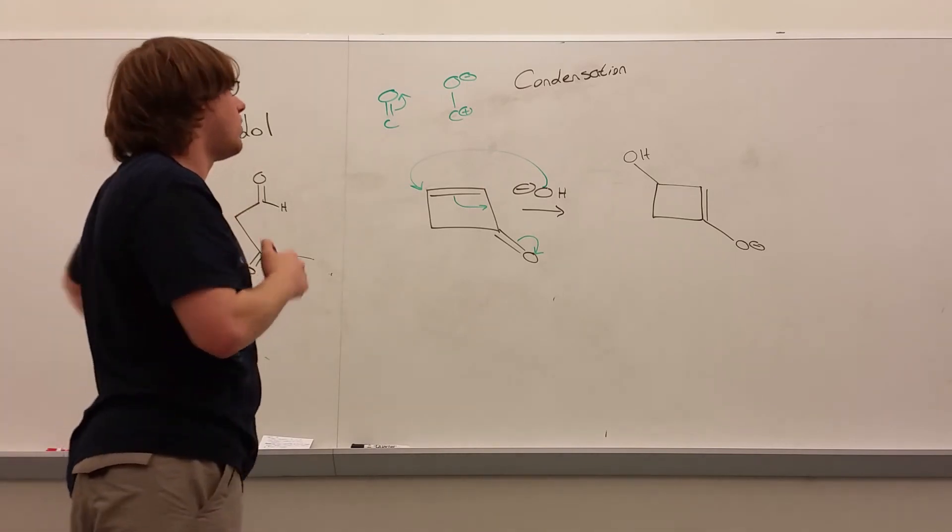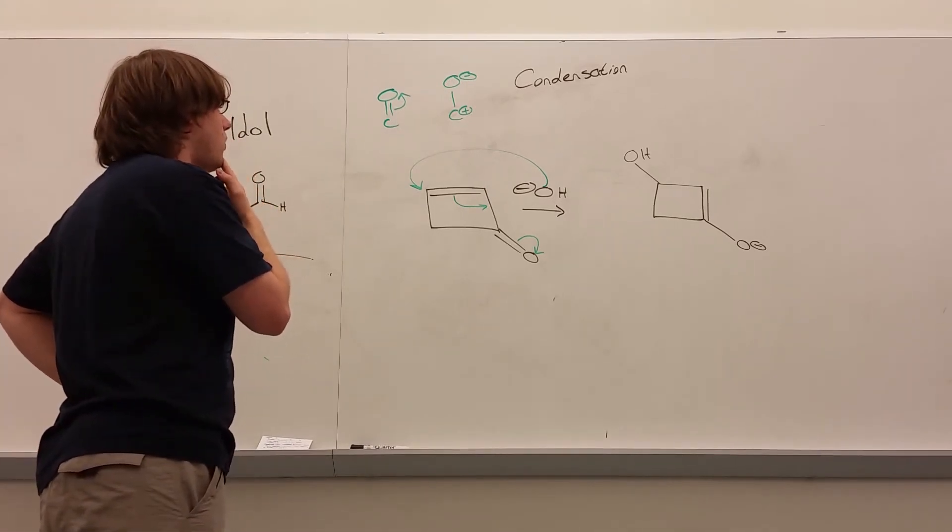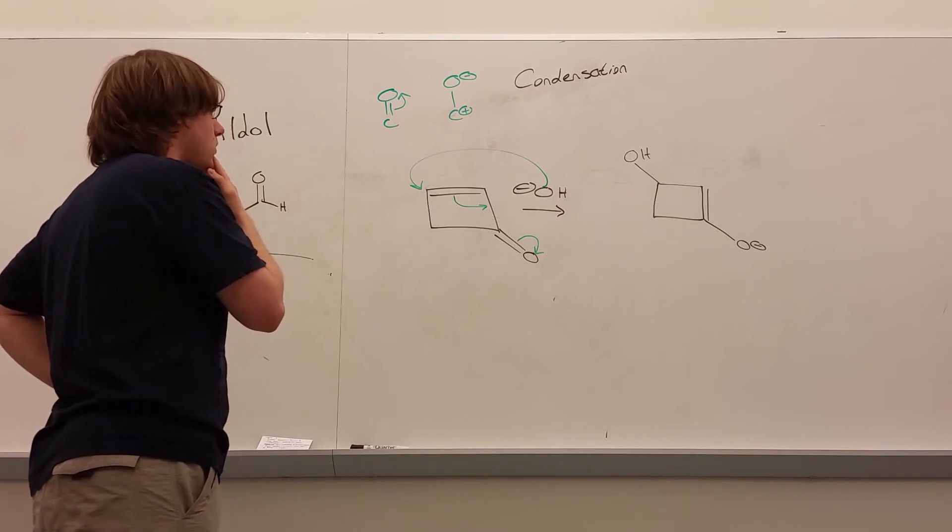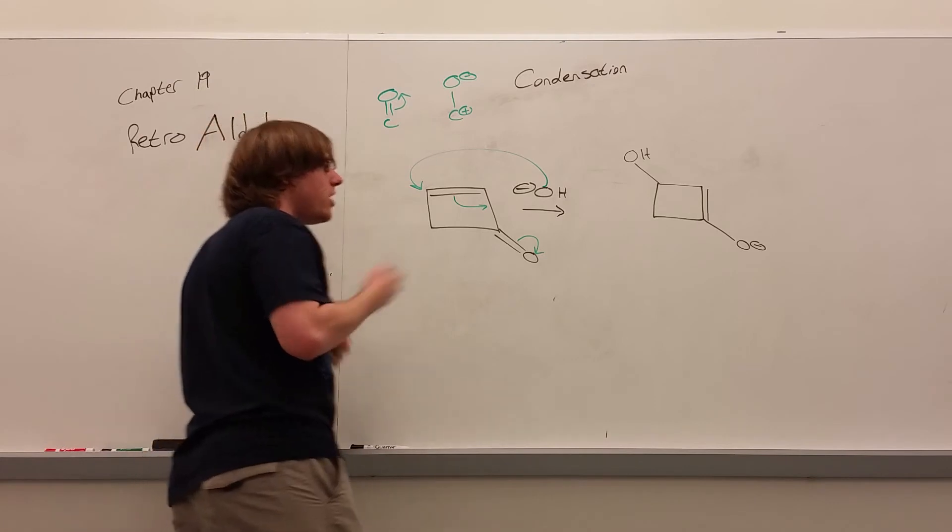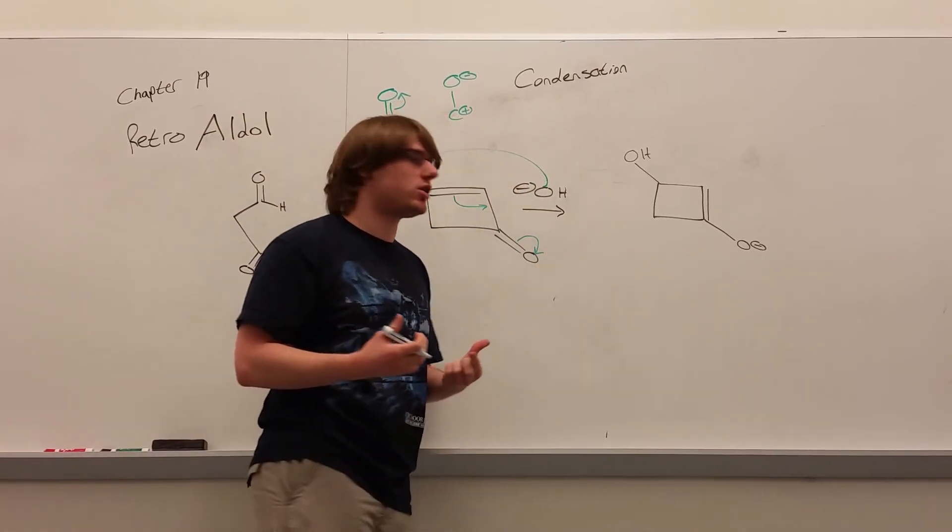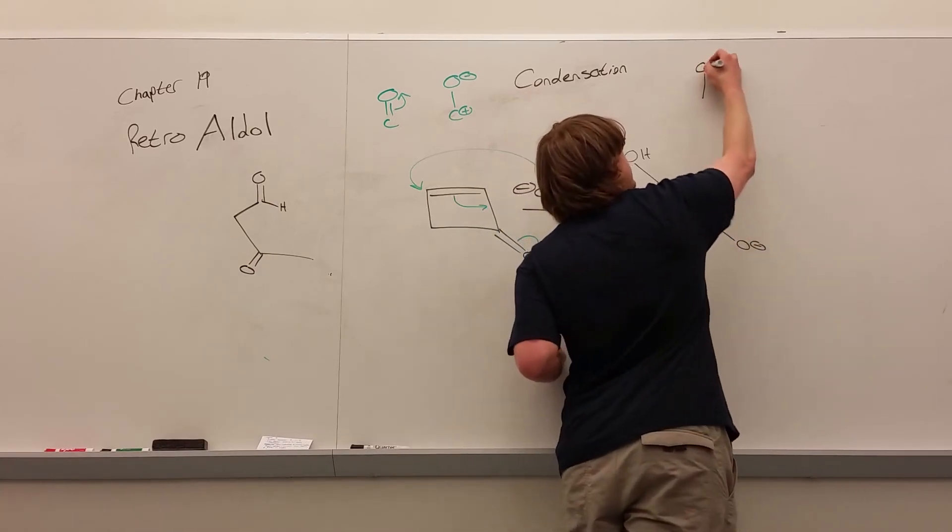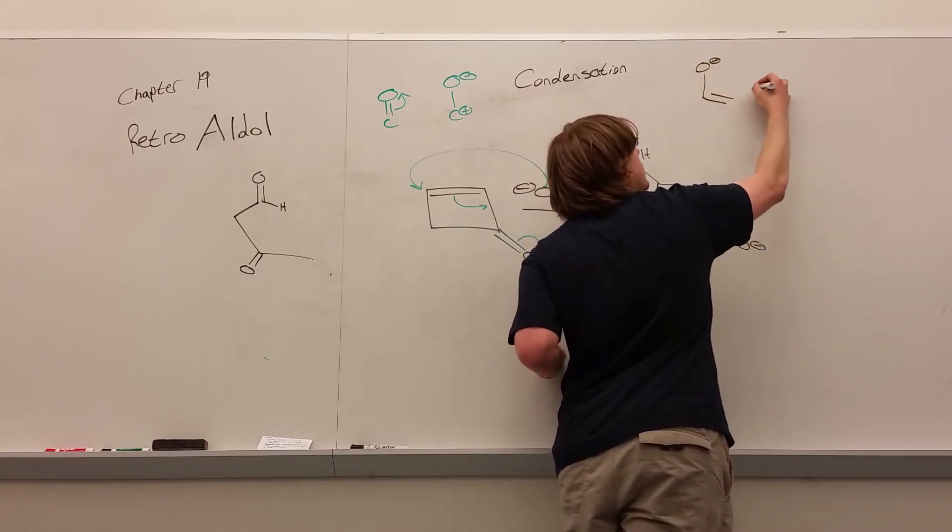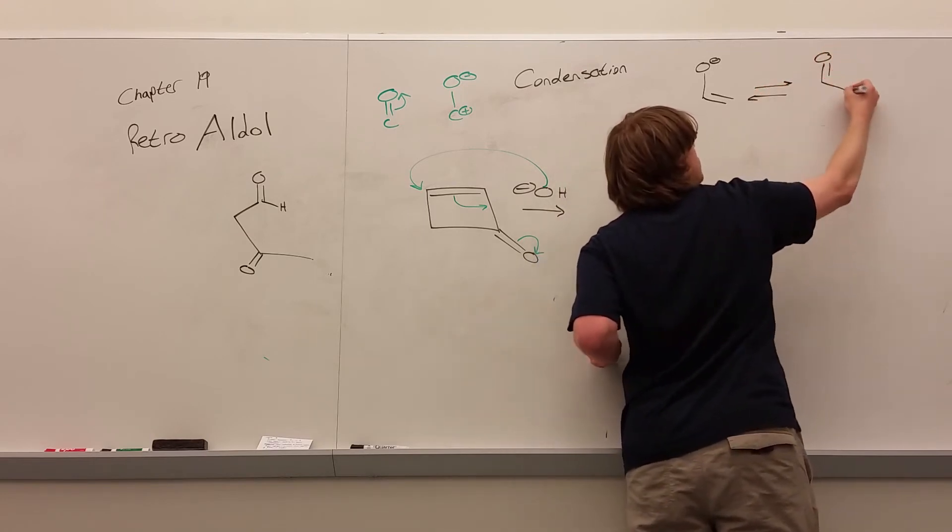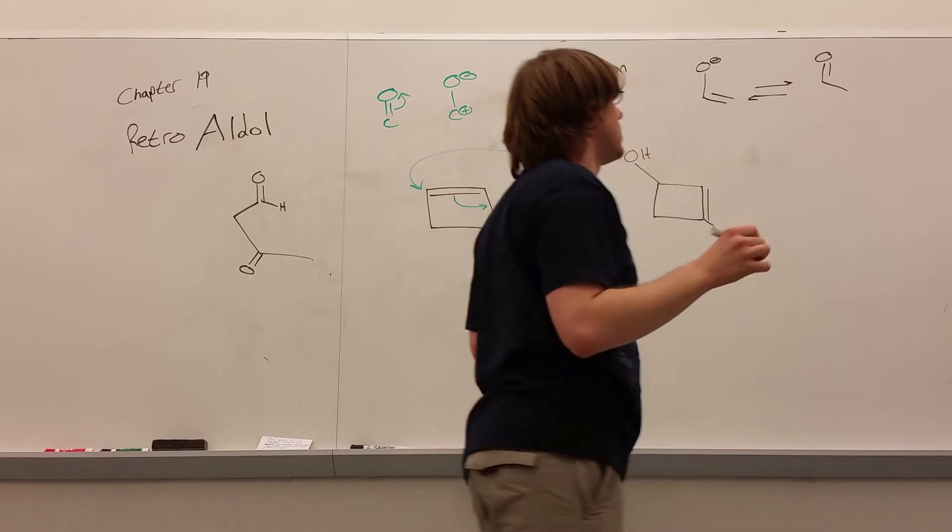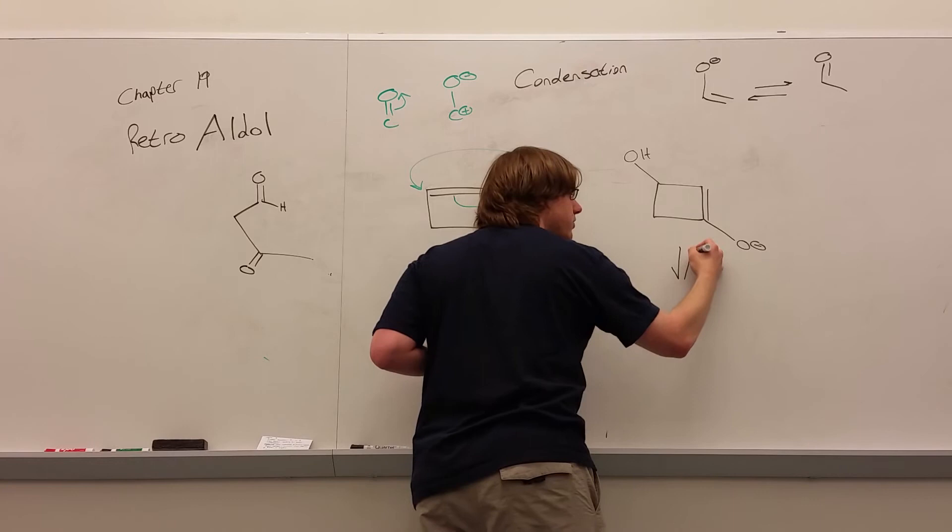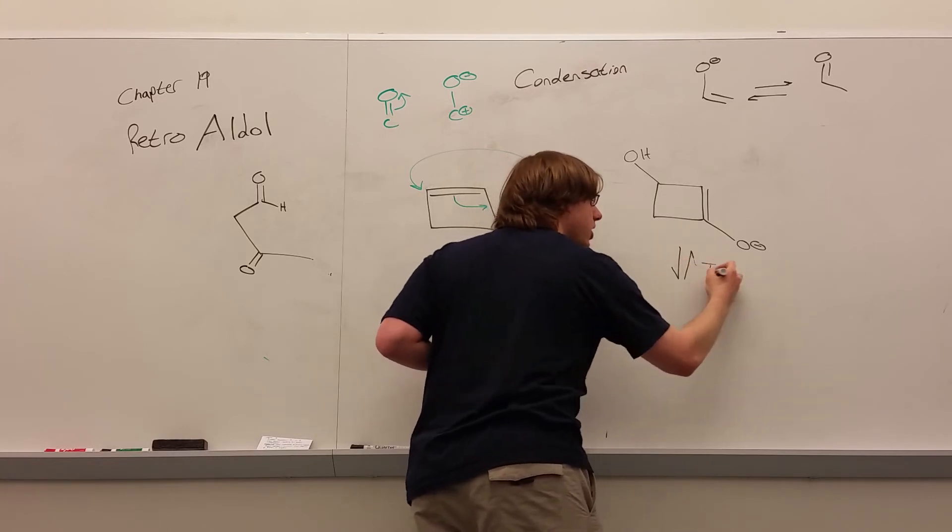Now, one thing you have to remember about enolates is they're constantly doing what's called tautomerization. Enolates are constantly fluctuating between their enolate form and their carbonyl form. Back to back. Okay? Which means that's what's going to happen here.